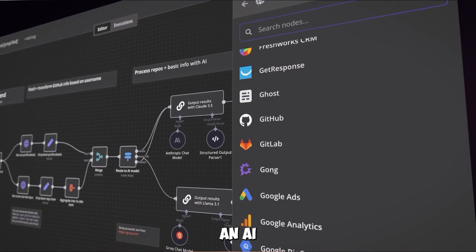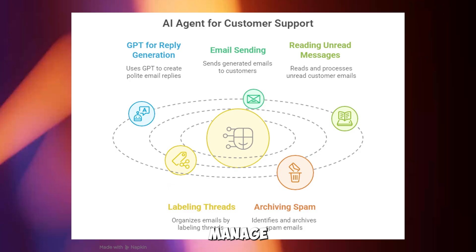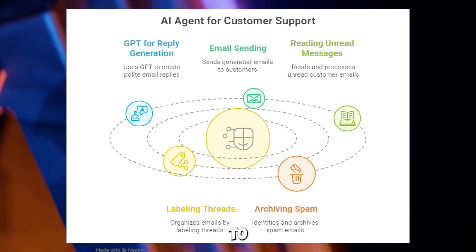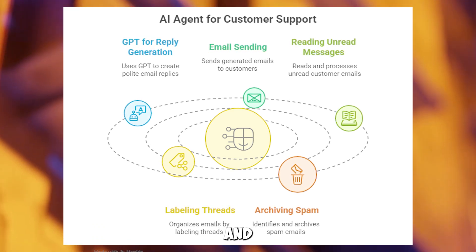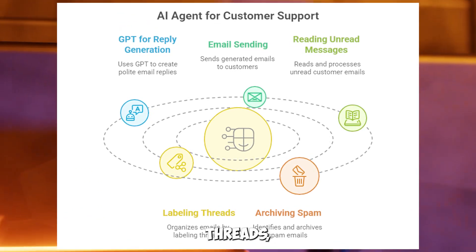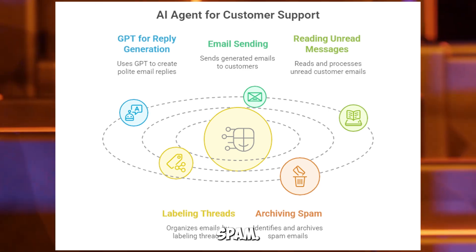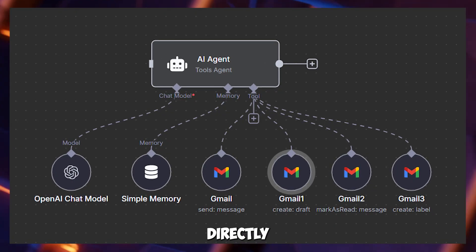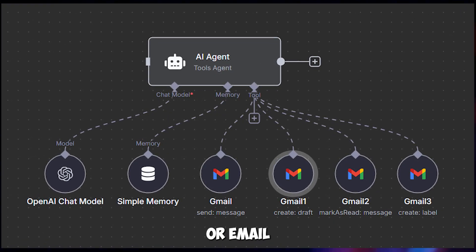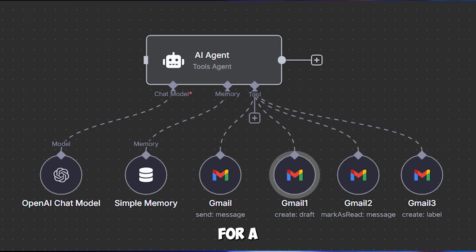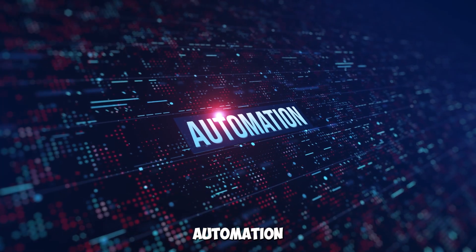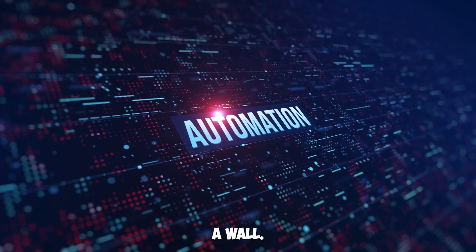Consider an AI agent you've built in N8N to manage customer support emails. It uses GPT to generate polite replies and performs actions like sending emails, reading unread messages, labeling threads, and archiving spam. You've connected Gmail nodes directly to the agent, passing inputs like recipient addresses or email bodies. This setup works great for a single workflow — it's straightforward and fast. But as your automation needs grow, this approach hits a wall.